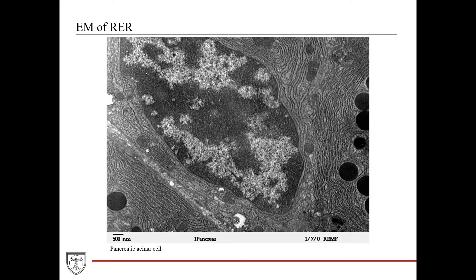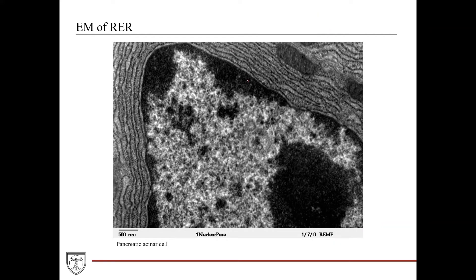Here's that same electron microscopy section we looked at earlier. Here's the nucleus, and then if you look at these squiggly lines adjacent to the nuclear membrane, this is actually your rough endoplasmic reticulum. If we zoom in, you can see these black dots — these black circles — in an almost studded appearance across these lines. These are the ribosomes. These ribosomes appear as black dots on the membrane surface of the rough endoplasmic reticulum, giving it a bumpy or rough appearance, which is why it's called the rough endoplasmic reticulum.